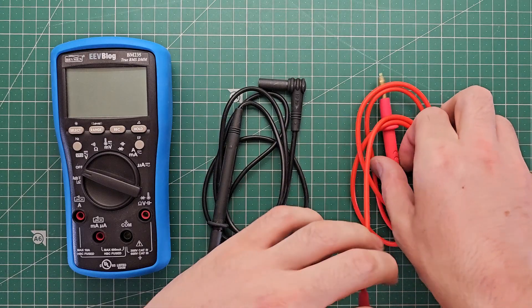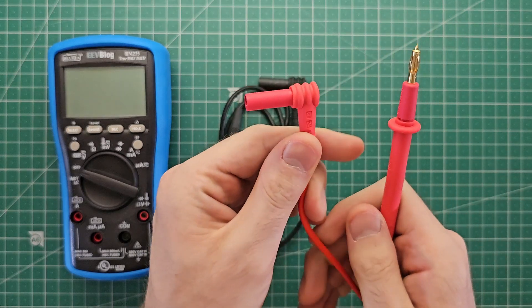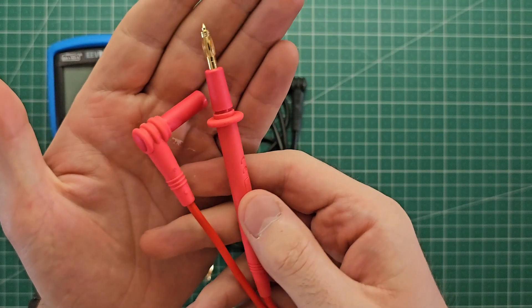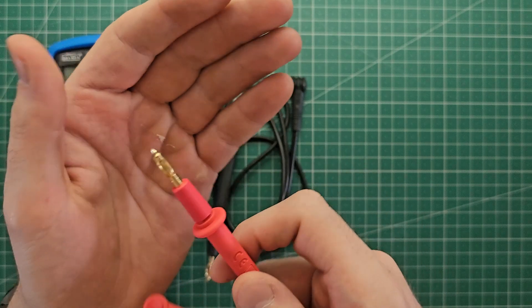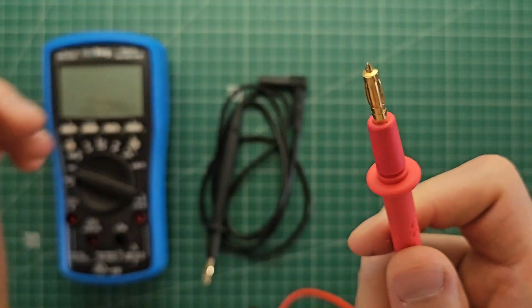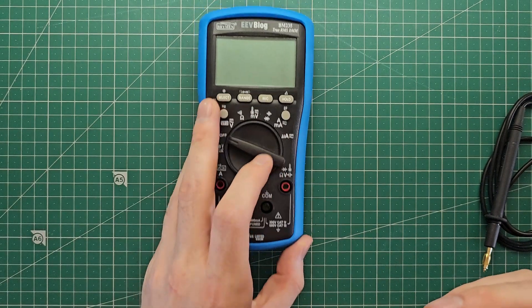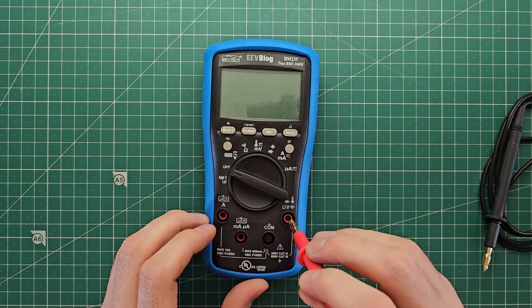If we take a look at the probes they have a right angled banana connector on one end and the probe on the other. This is the same for red and black and if we look closely we can see that the probe end also has a small collar on it. This effectively makes this a banana as well. So if you need to you can actually plug it into the banana socket on the multimeter for example.